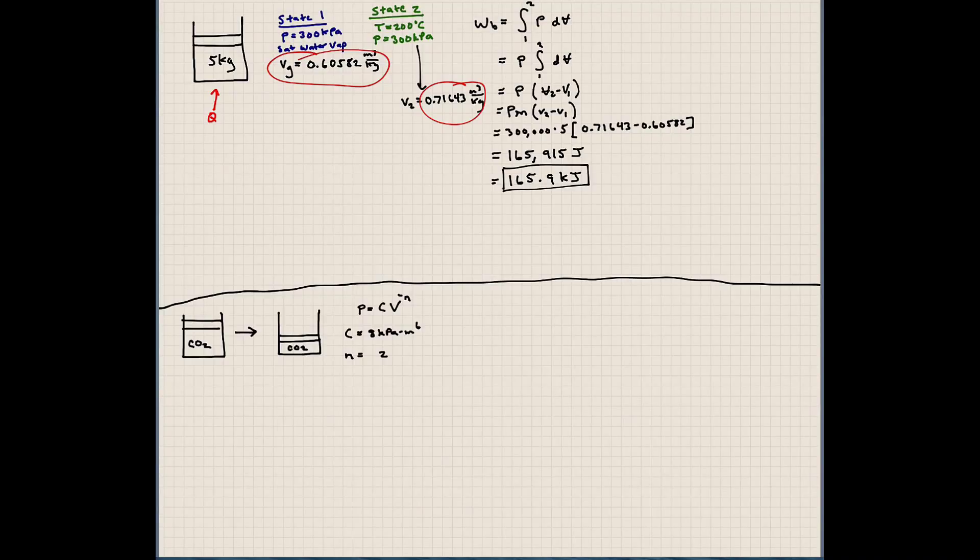So that's how much work is done as this piston expands due to this temperature increase inside of it. Now let's go to the bottom here and work out a polytropic process problem. These are a little bit different than our one that we just worked out where we were talking about boundary work. In this problem, we have carbon dioxide that is compressed, and the pressure inside of this chamber follows the relationship P equals a constant times V to the minus n. The constant here is 8 kilopascals times meters to the sixth, and our exponent is 2.